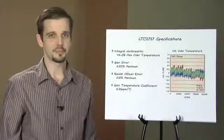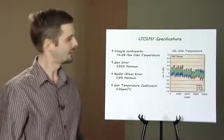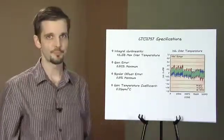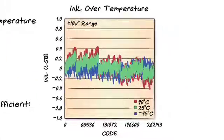Let's take a look at the basic specifications. The LTC2757 has a guaranteed integral non-linearity of one least significant bit over temperature. At the 18-bit level one LSB is four parts per million. While the guaranteed INL is one LSB this plot shows that a typical part has an INL of about a quarter of an LSB or around one part per million.